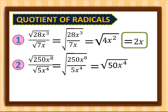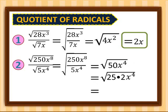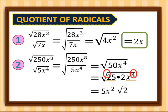Now we simplify: square root of 50 is the same as 25 times 2, and we copy x raised to 4. Square root of 25 gives us 5. For x raised to 4, we divide 4 by the index 2, giving us exponent 2, and we leave the 2 inside the radical. So for number 2, we have 5x squared, square root of 2.